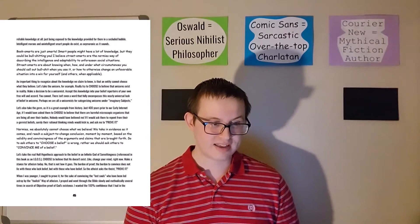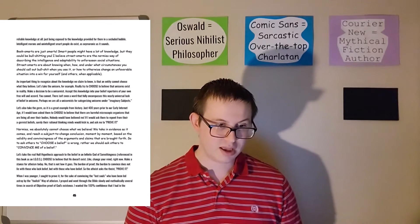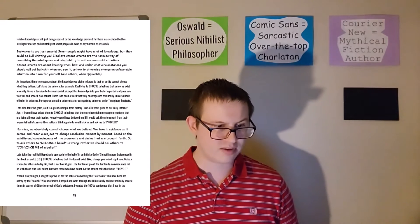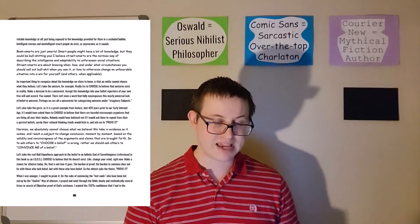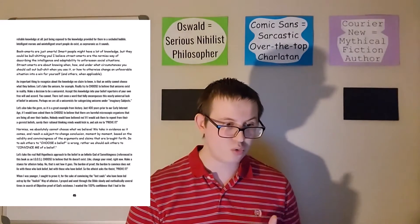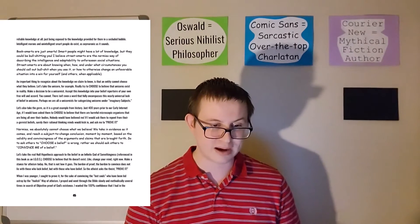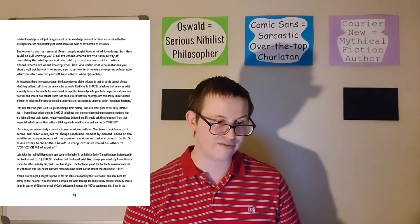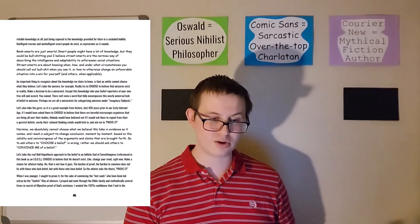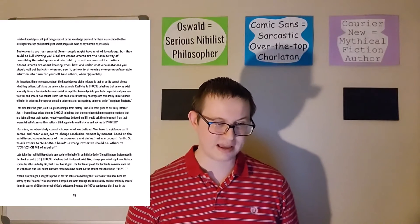An important thing to recognize about the knowledge we claim to know is that an entity cannot choose what they believe. Let's take the unicorn for example — really try to choose to believe that unicorns exist in reality. Make a decision to be a unicornist. Accept this knowledge into your belief repertoire of your own free will and accord. You can't. There isn't even a word that fully encompasses this nearly universal lack of belief in unicorns. Perhaps we are all unicornists for categorizing unicorns under imaginary subjects.